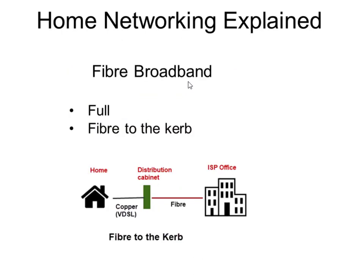There are two types of fibre. If you're wondering why, when you go to your provider, they offer different speeds and ask you to put in an area code — it's because there's full fibre, which offers the higher speed, and then there's fibre to the curb. In the UK, there's a green cabinet in the street, and the fibre goes from the ISP office into the green cabinet, with the last stretch using the old copper telephone cable. That technology is called VDSL, making this connection slower — oftentimes much slower depending on how far you are from one of those green cabinets.